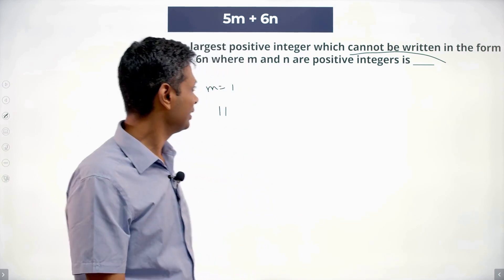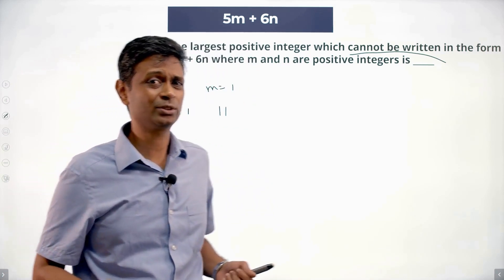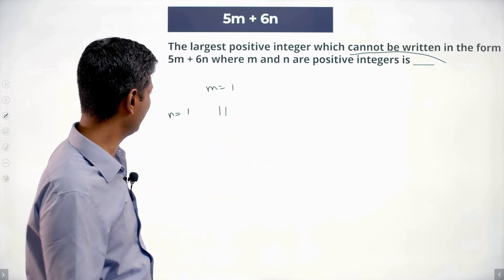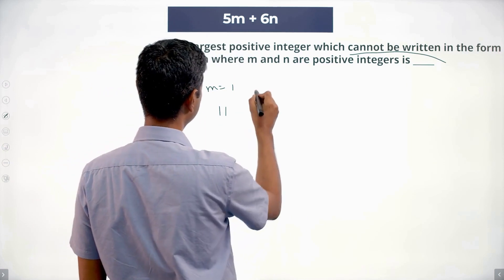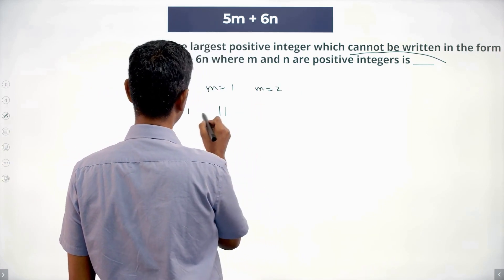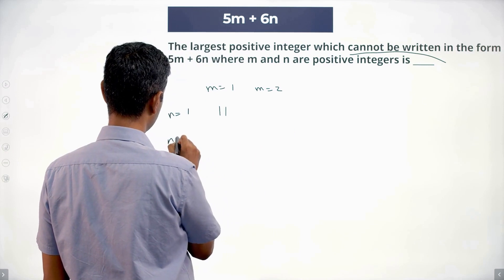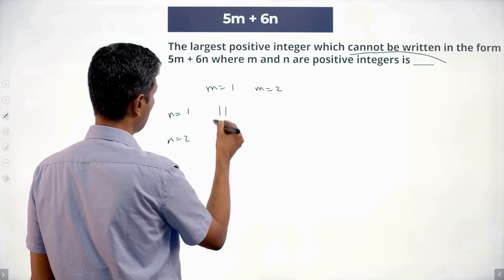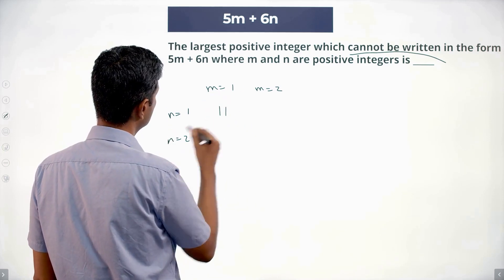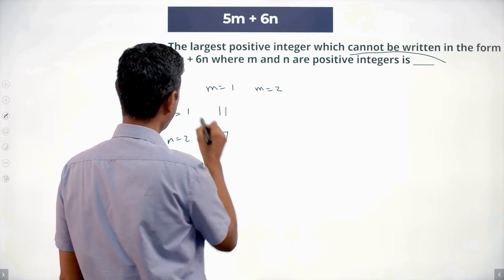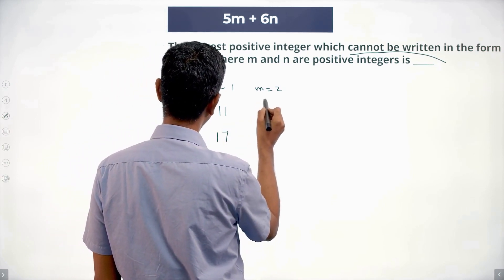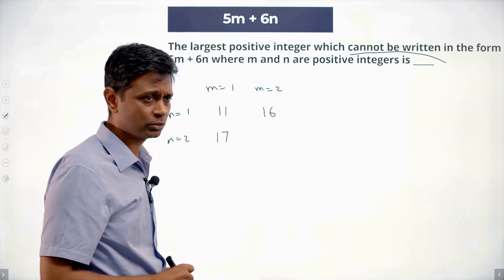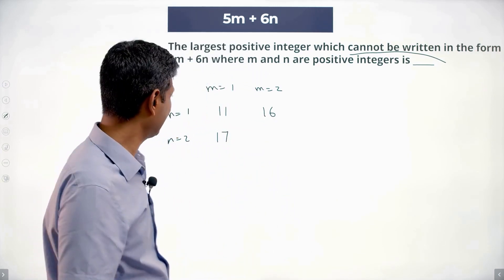I know 11 can be written. What are the next numbers that can be written? I can keep n as is and put m equal to 2, or keep m as is and put n equal to 2. With m=1, n=2: 11 plus 6 is 17. With n=1, m=2: 10 plus 6 is 16. So I can write 11, 16, and 17.